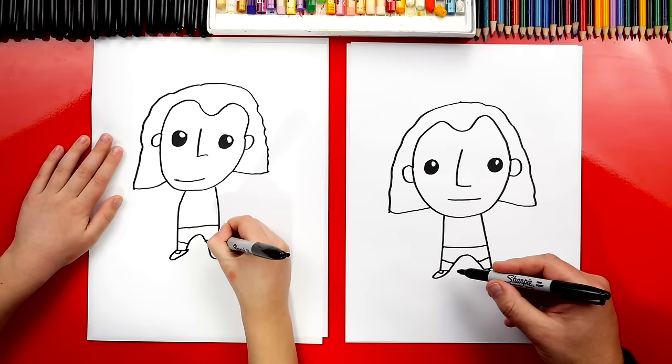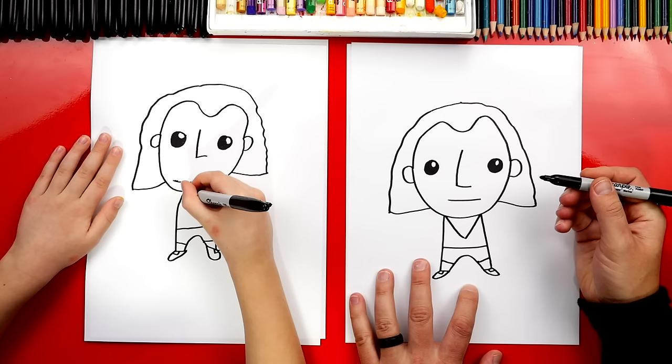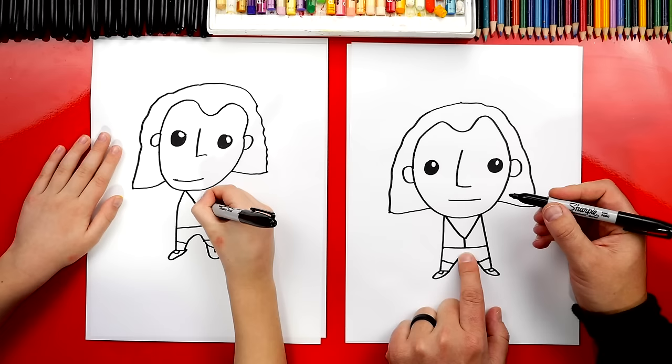Then we're going to draw his jacket, his suit jacket. We'll draw a V. The letter V comes down, back up, right in the middle of his body. And then we can turn it into the letter Y by connecting the center of the V down.